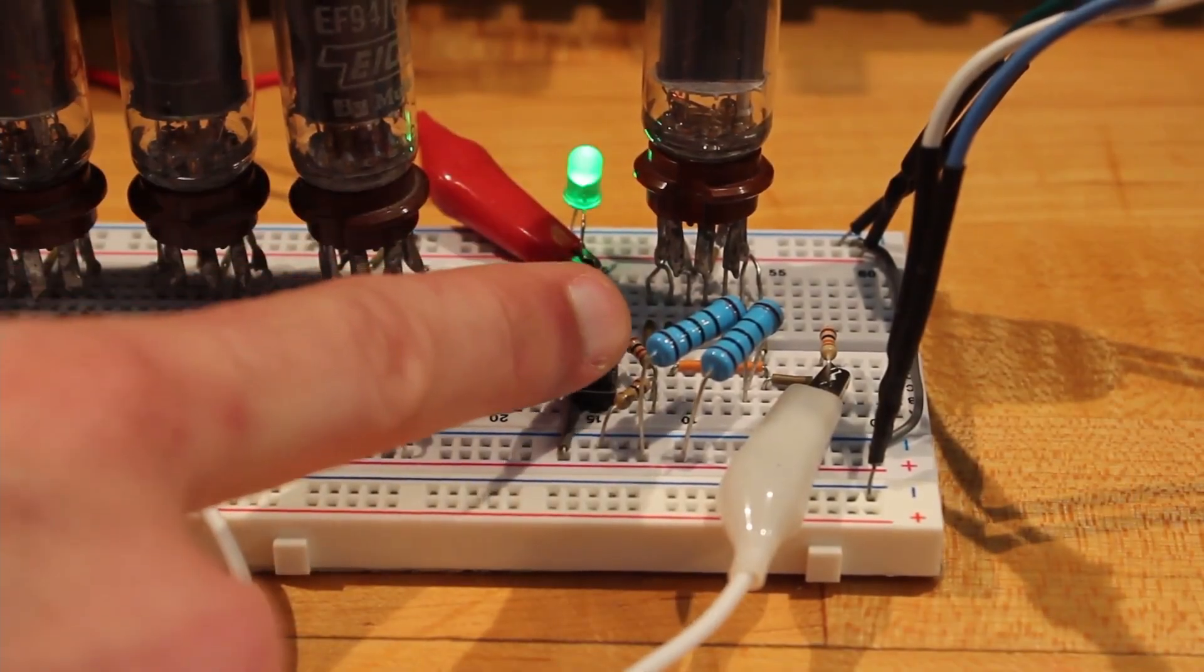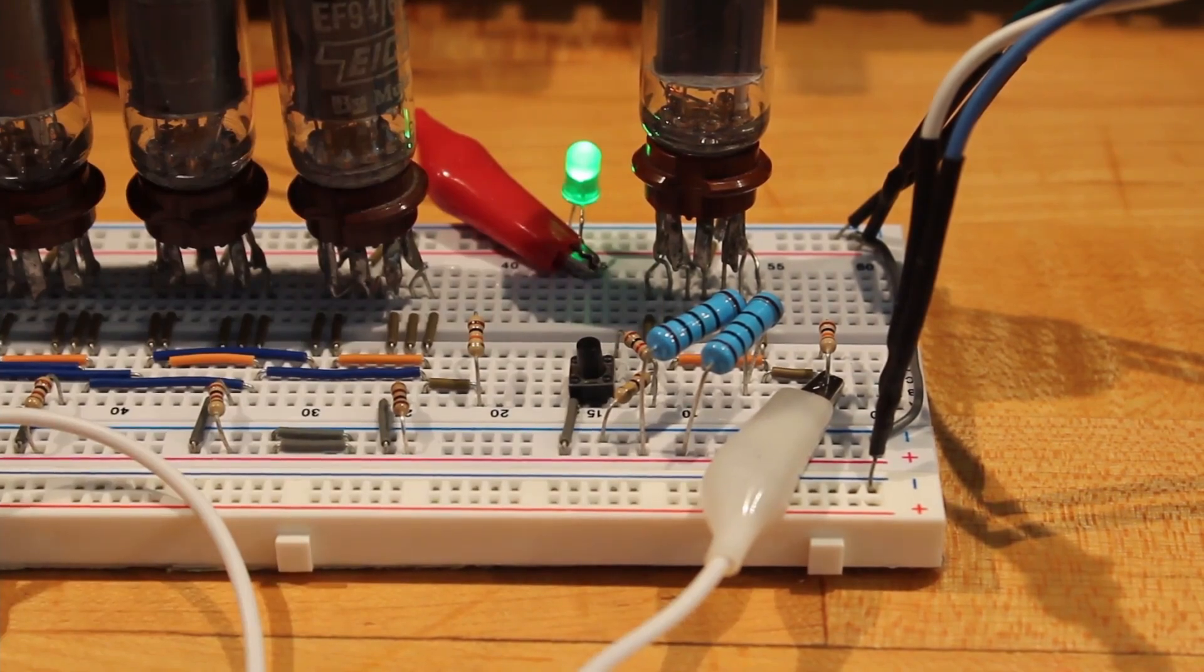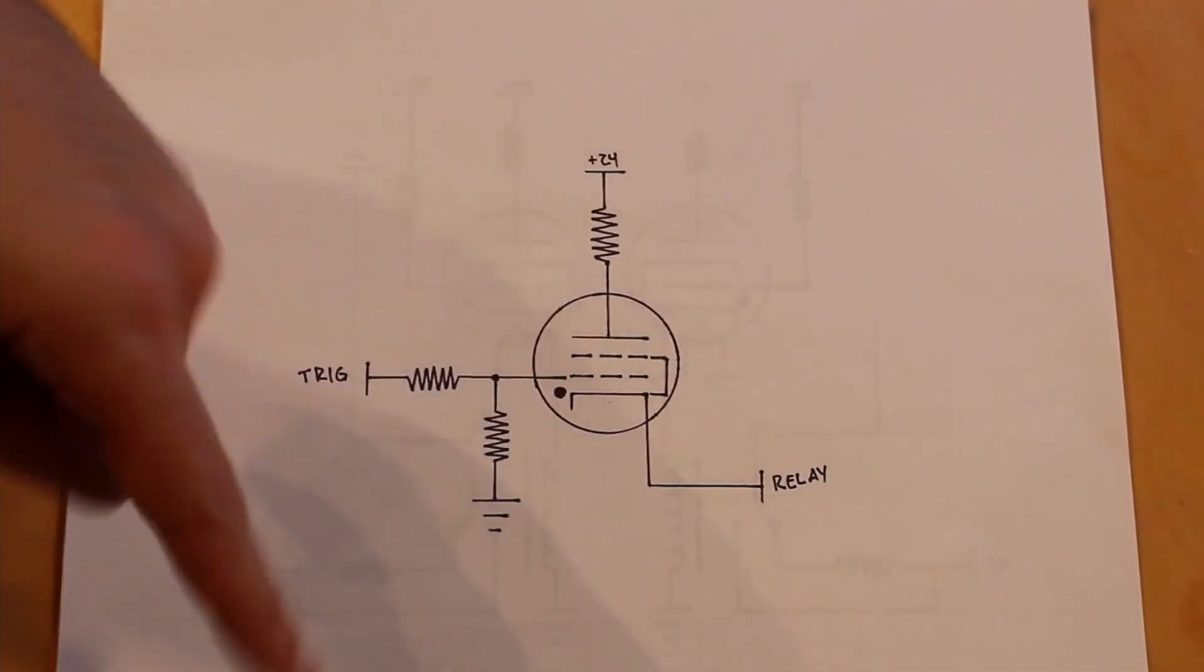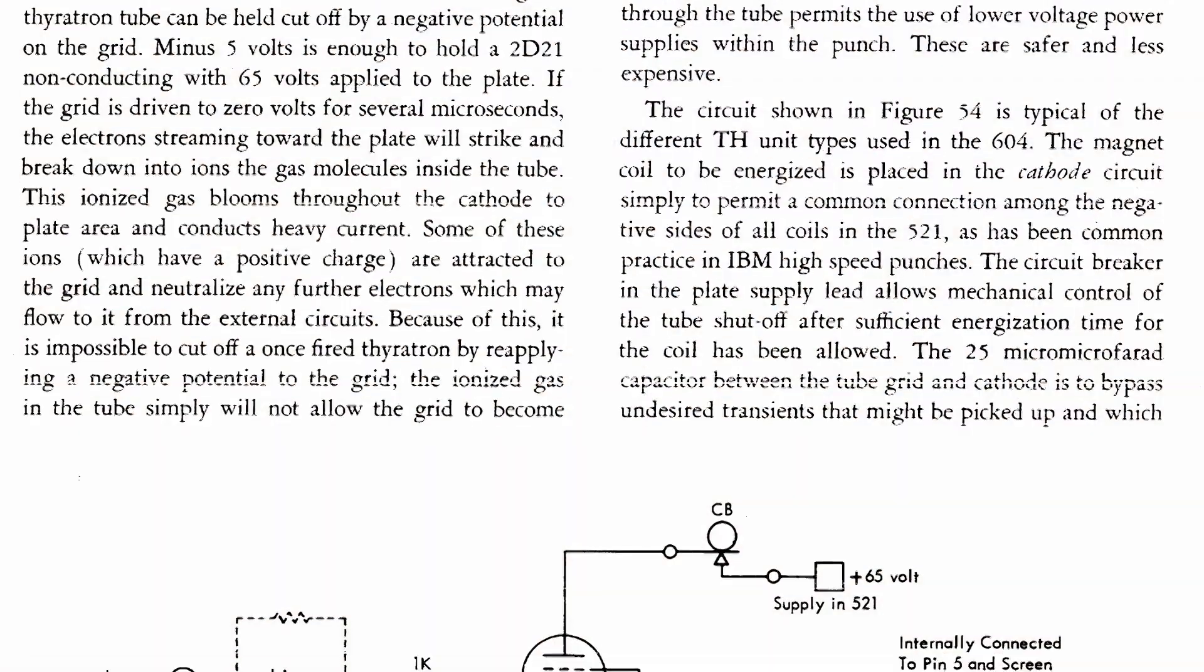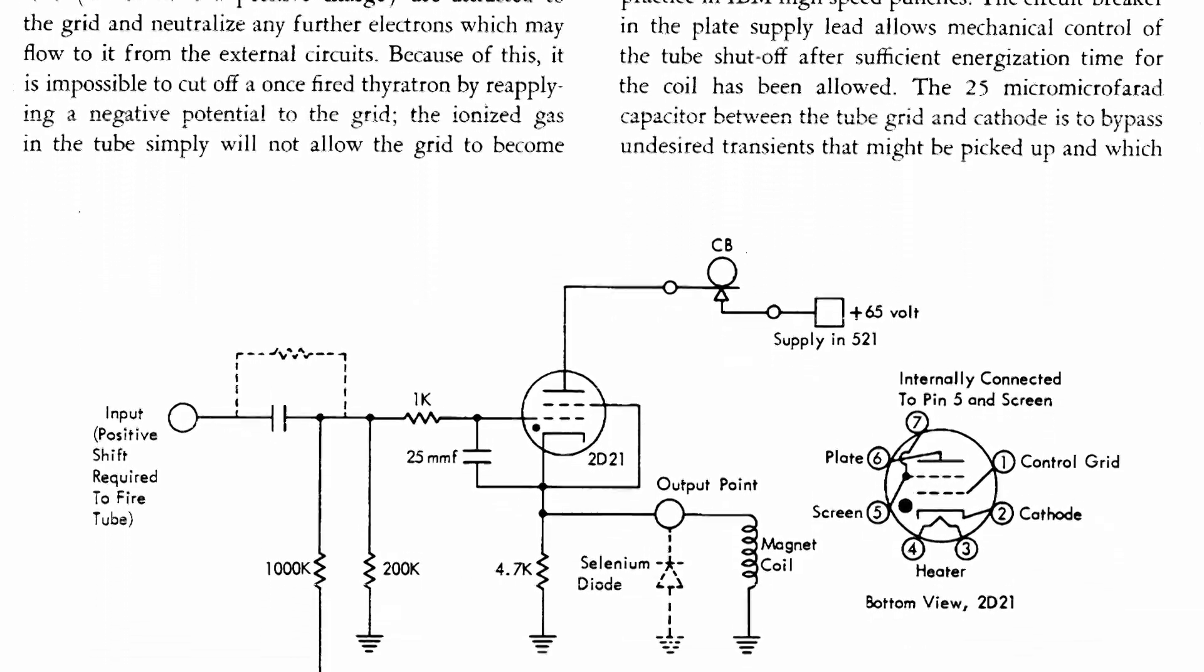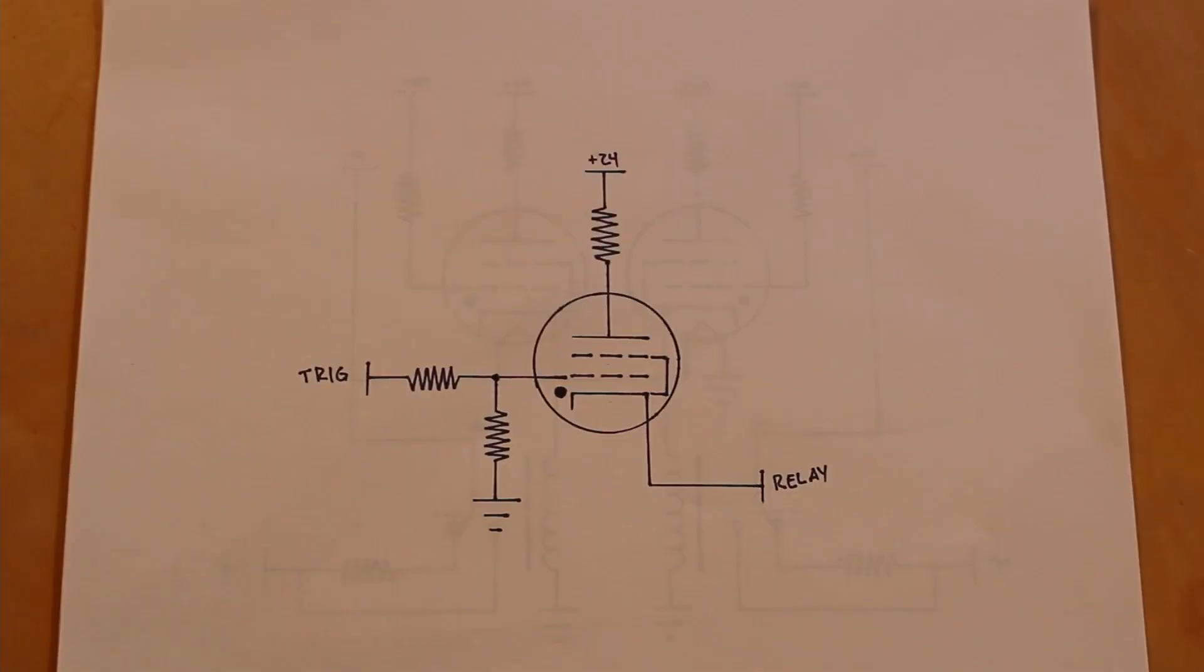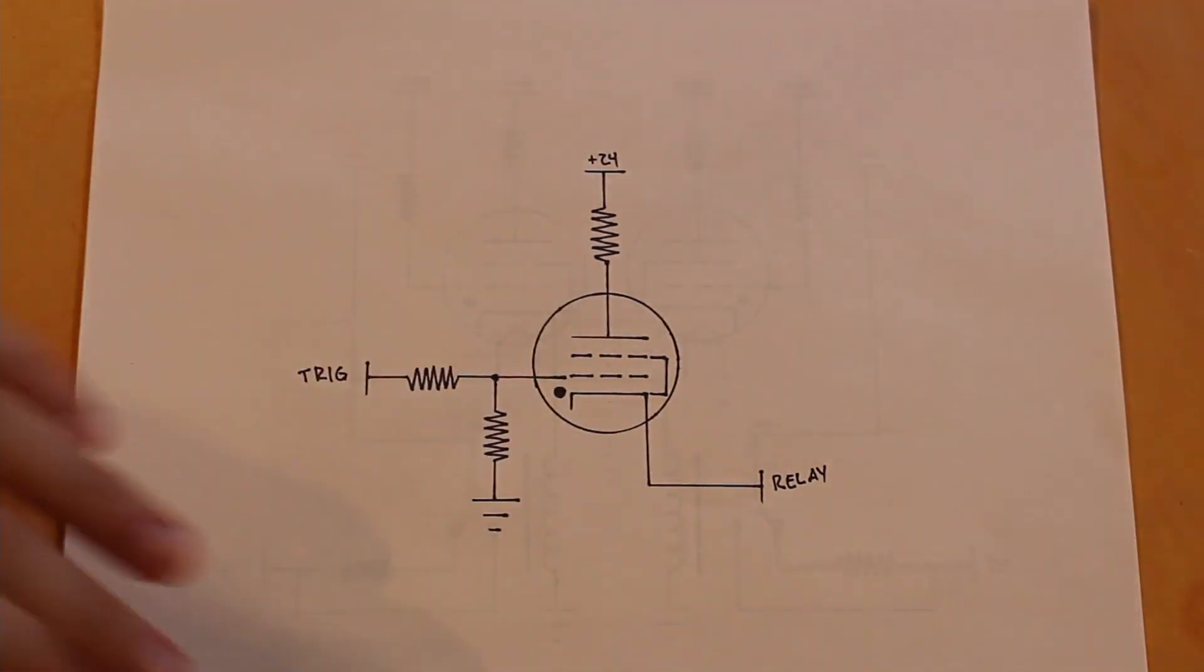One other unique thing you may have noticed was that once the thyratron is energized, we can't turn it off. That's because as soon as the plasma is created connecting the plate to the cathode, the grid gets encased in positive ions, and so this essentially completely disables the grid. So the only way to de-energize a thyratron is to cut the flow of electrons. We either disconnect the relay or we disconnect B plus. Using thyratrons to power relays is not an idea that I came up with. As a matter of fact, IBM actually used this exact tube, the 2D21, as relay drivers on their computers as well. So we're using the right tool for the job here. We know how to drive our relay and we know how to set the relay up, so now we need to tackle how to do the time delay.